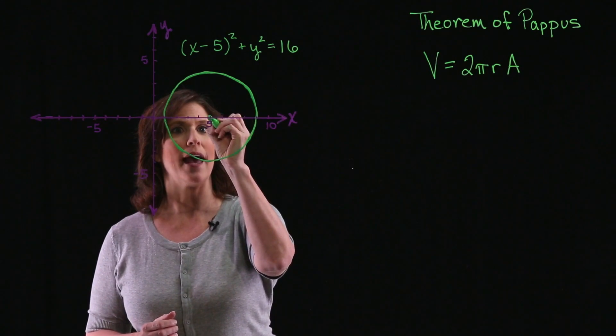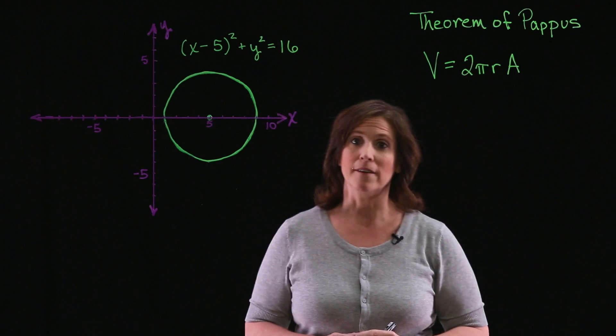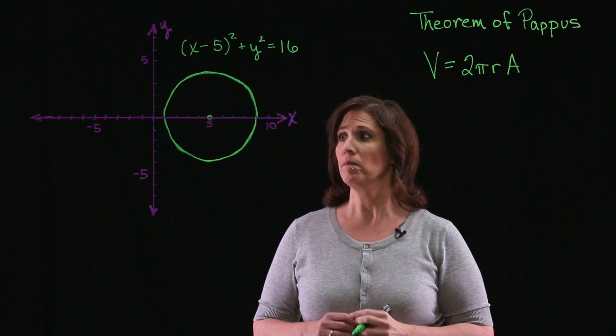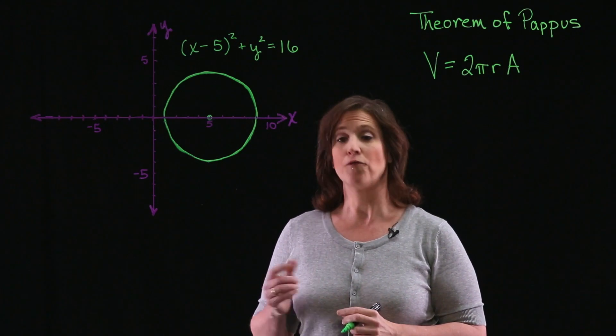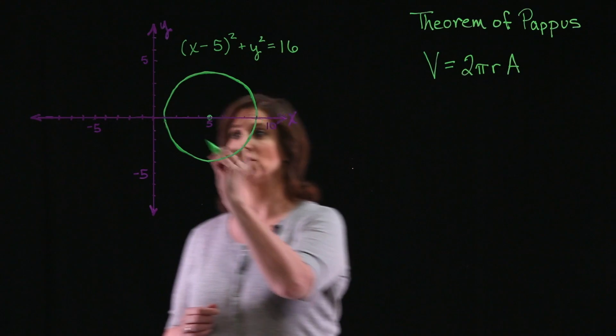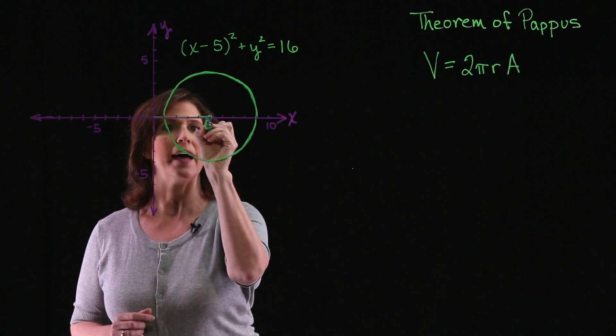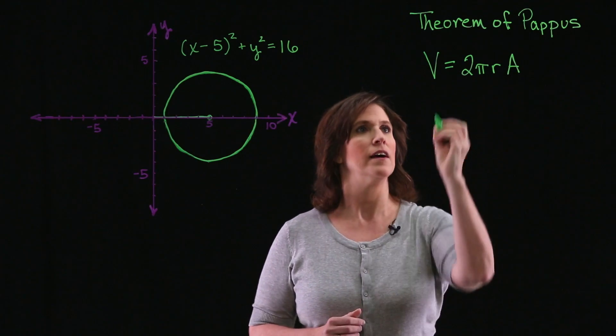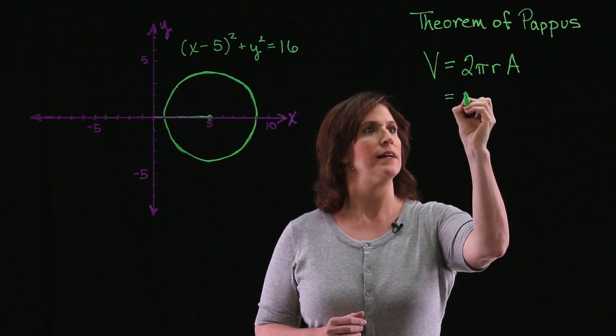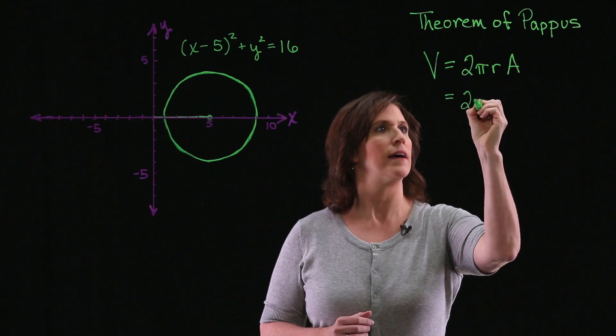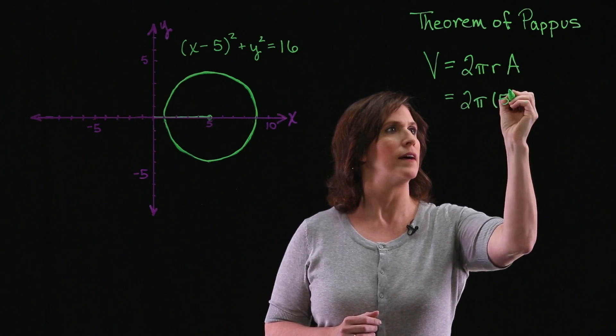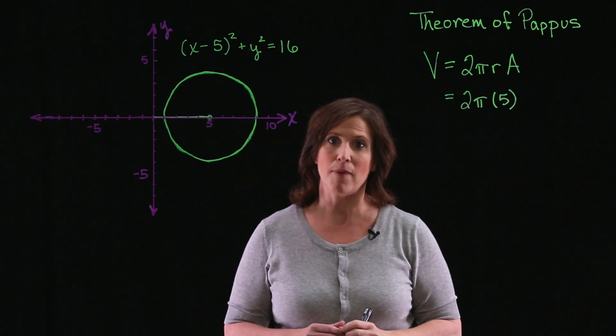So my centroid is located at the point (5, 0). So what's the distance from the centroid to the axis of rotation? Well, we can see on our figure that that distance is 5. So my volume formula is 2π times 5 times the area of my region.